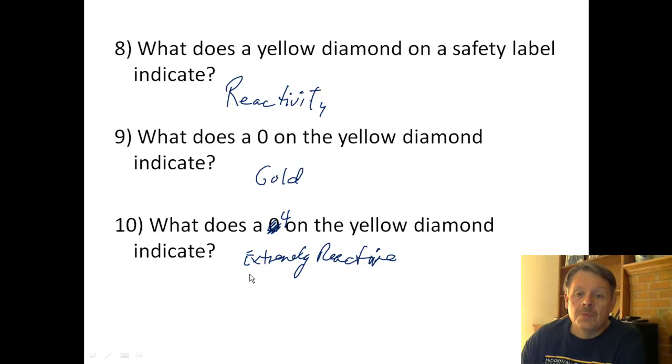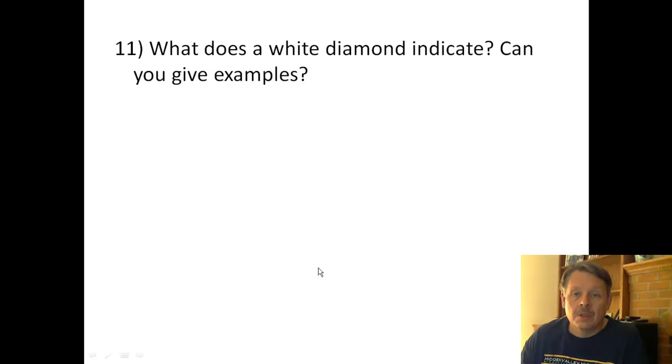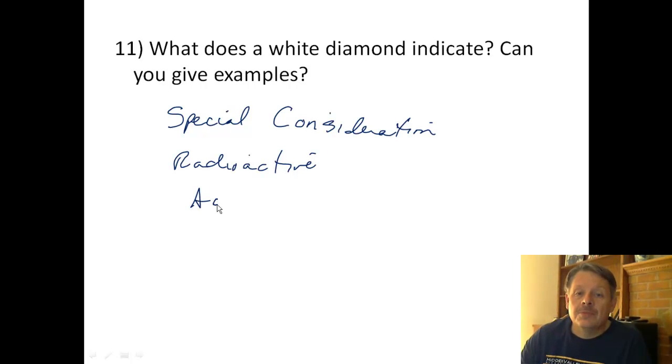So something that has a four is extremely reactive. And what does a white diamond indicate? Give some examples. Well, a white diamond shows special considerations or special circumstances—call them what you will. For example, this might be something that is radioactive, it might be an acid, it might be a base.